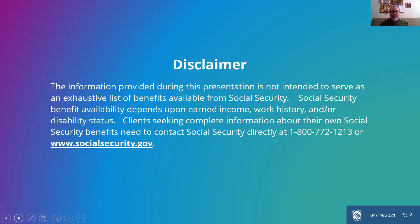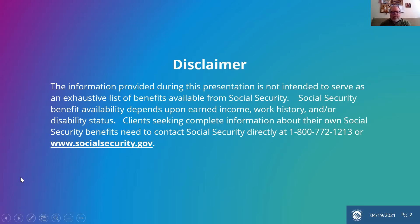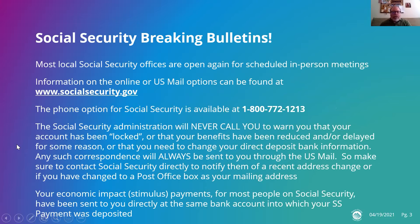The disclaimer I have to give is that this information provided during this presentation is not intended to serve as an exhaustive list of benefits available for social security. Social security benefit availability depends upon earned income, work history, and/or disability status. Clients seeking complete information about their own social security benefits need to contact social security directly at 1-800-772-1213 or www.socialsecurity.gov. Everybody's situation in terms of claiming social security is specific to them — there are different views on the best time to claim, whether to claim on your own benefit or a spouse's, and whether to claim early if still working. We'll touch on those principles, but it's really specific to your situation.